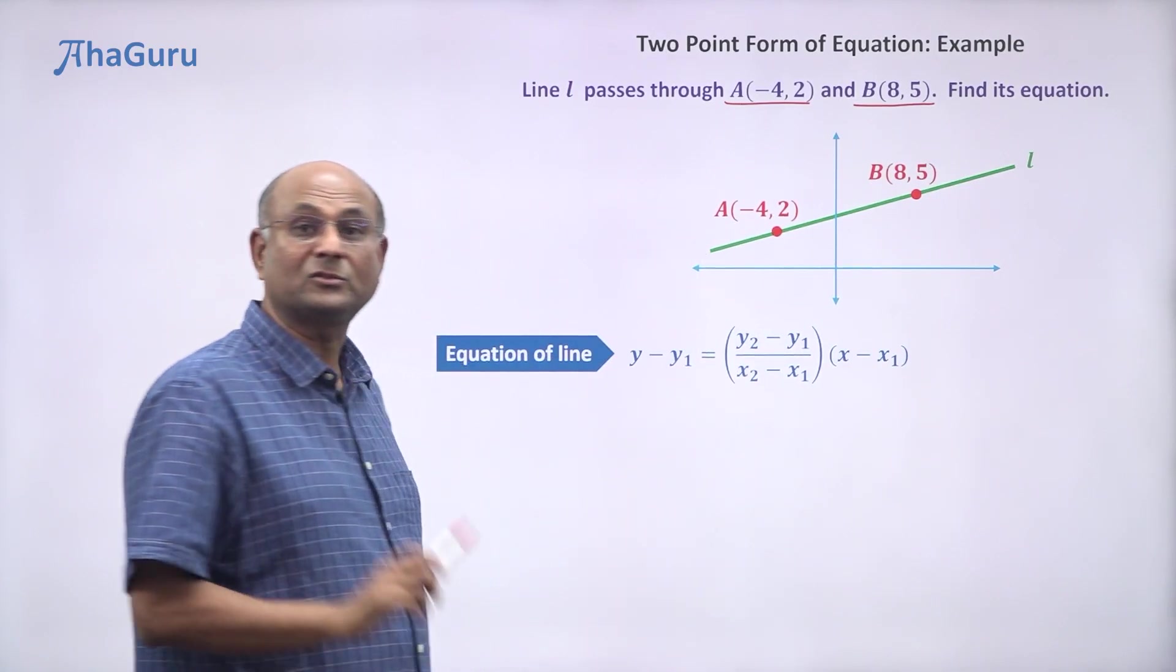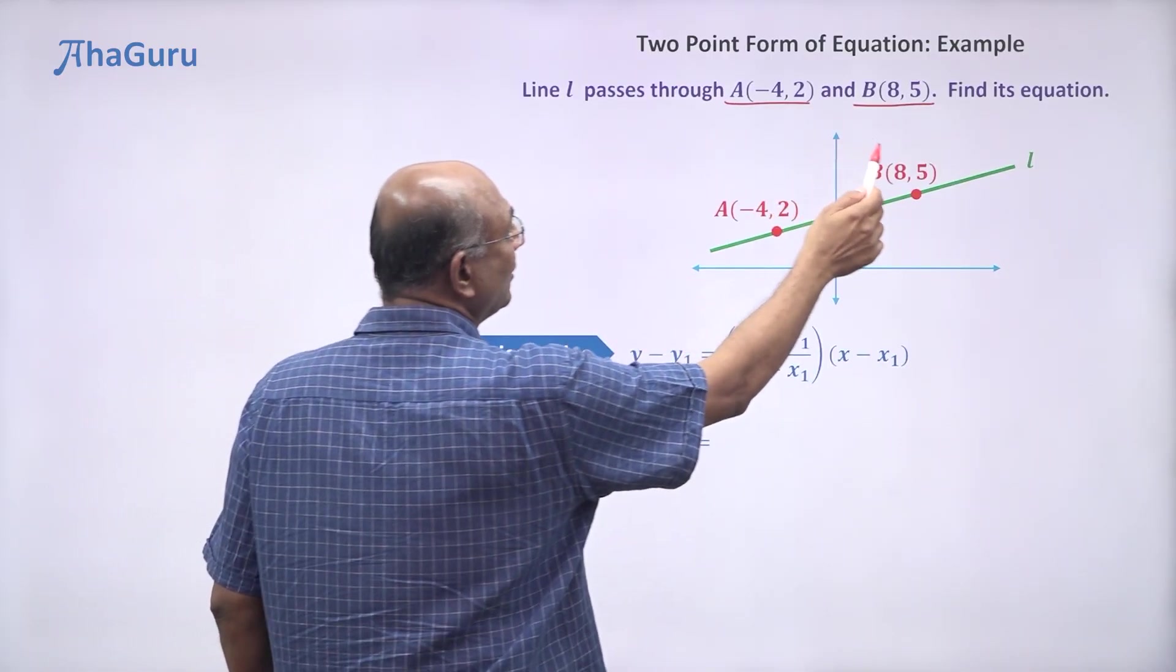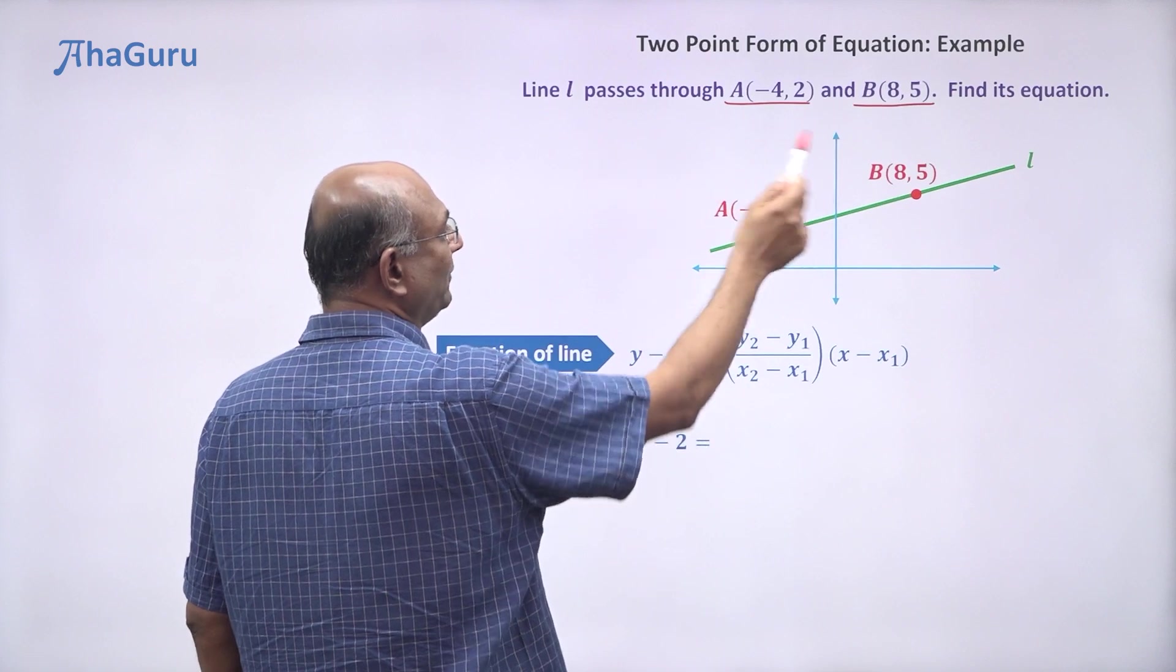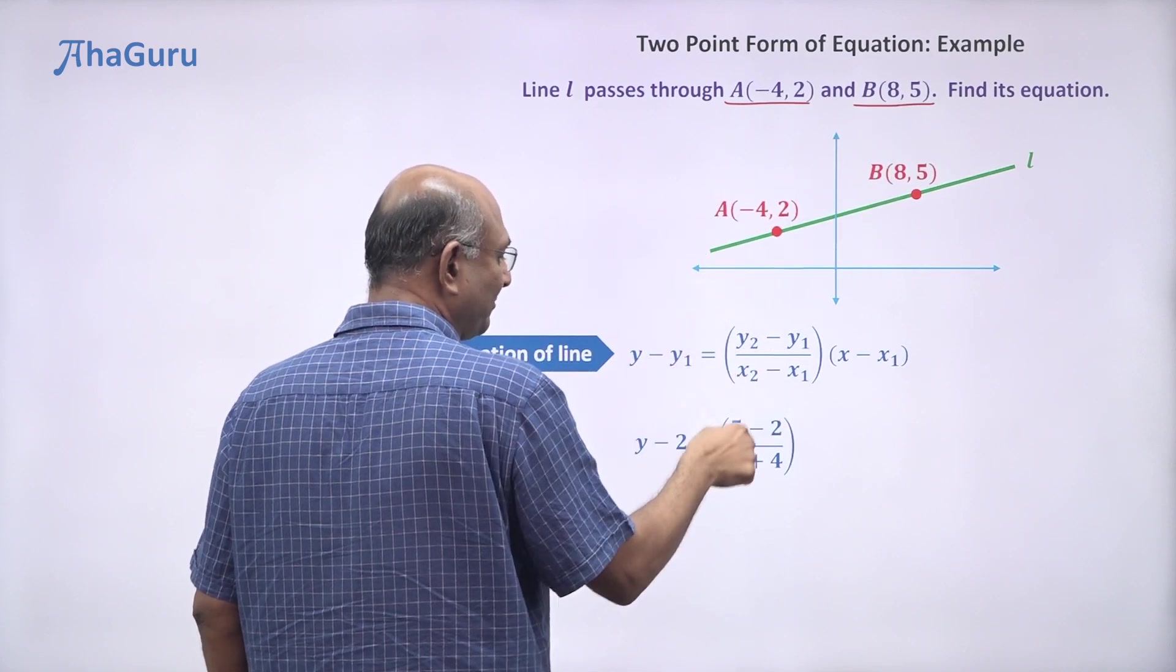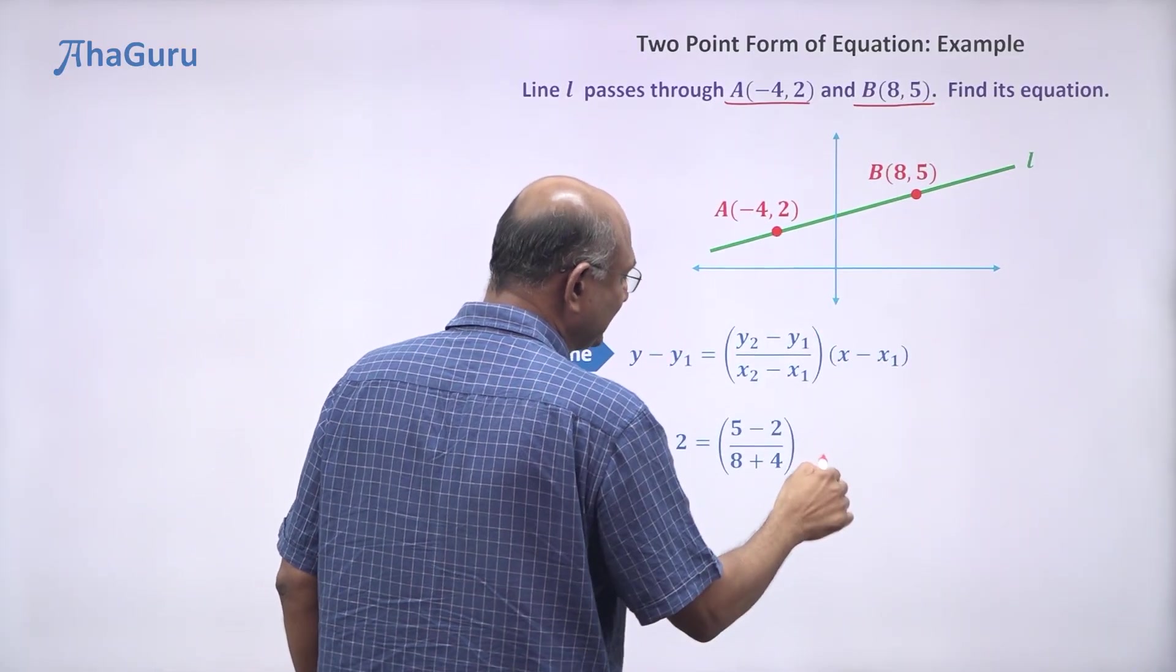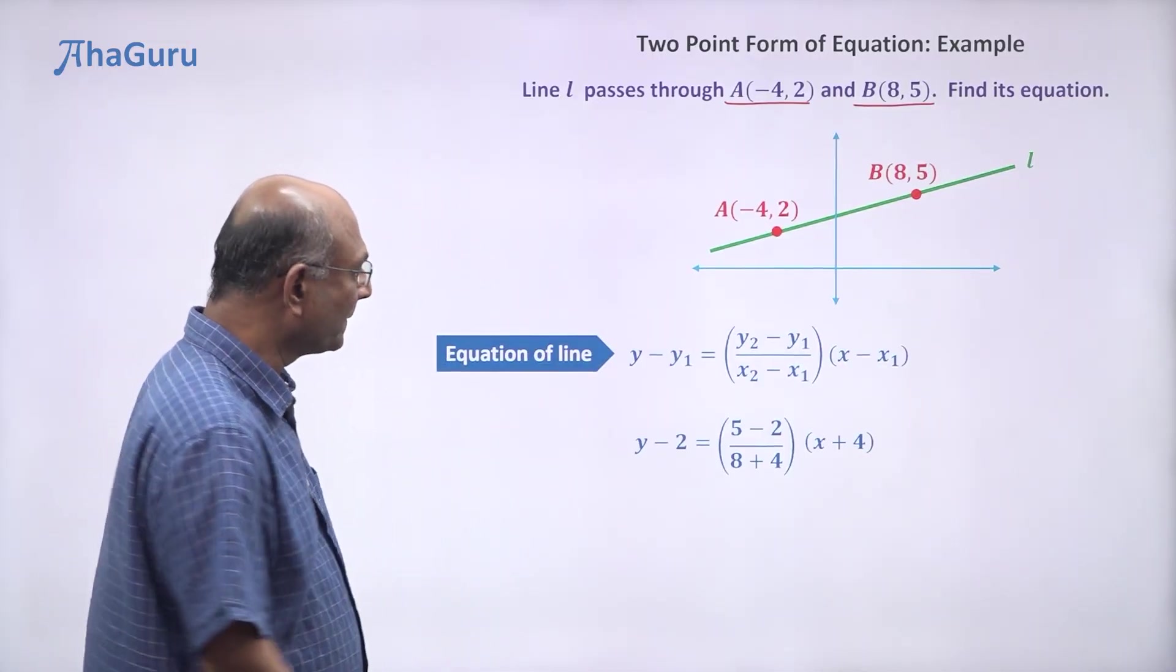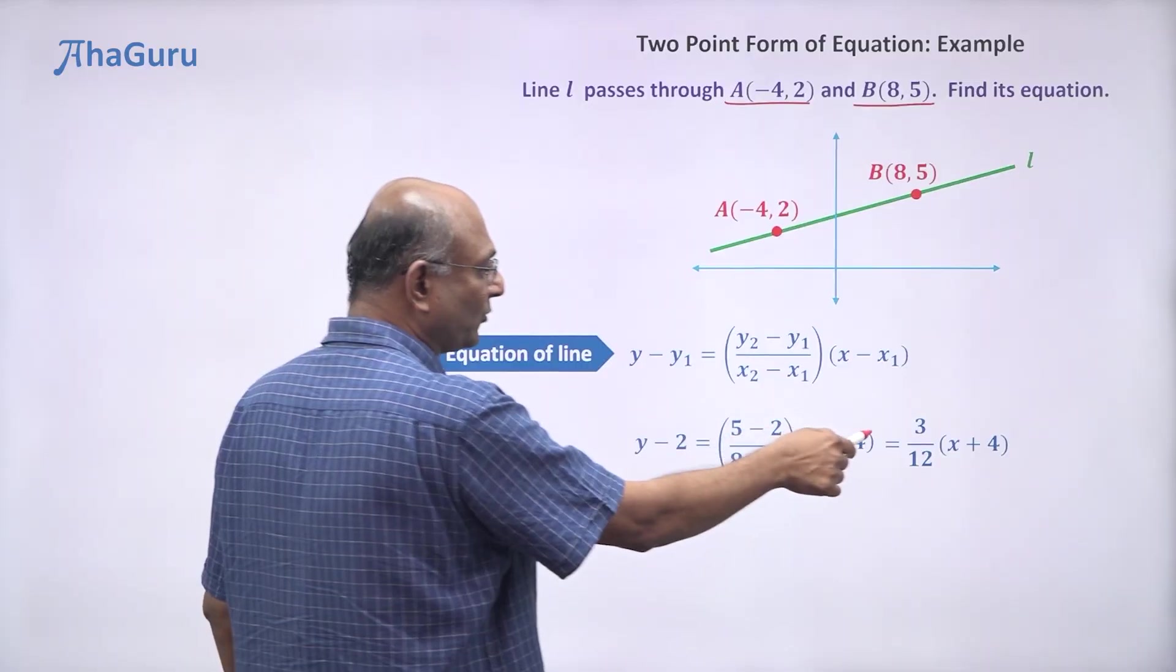So if I substitute, I'll get y - 2 = [(5 - 2)/(8 - (-4))](x - (-4)), so 8 + 4. This is the slope times (x + 4). What is this? 3/12, so 3/12 times (x + 4).